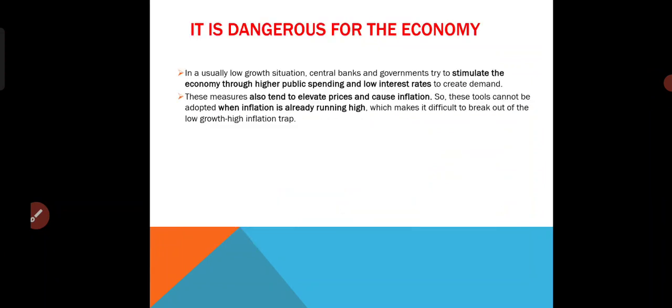Let us see why this is dangerous. It is dangerous for the economy because a very low growth rate is seen during stagflation. The central bank and government try to stimulate the economy through higher spending and low rate of interest. The government tries to spend more money during a low growth situation, and the RBI also tries to reduce the rate of interest so that more money will be supplied into the economy and the economy will be stimulated. In that way, RBI tries to stimulate the economy using monetary policy, and the government uses fiscal policy. But even though these measures also tend to elevate prices and cause inflation, these tools cannot be adopted when inflation is already running high — so fiscal policy and monetary policy are not going to work out.